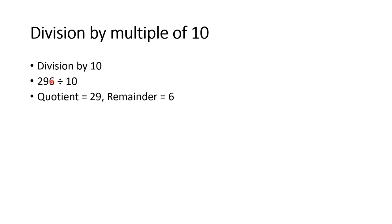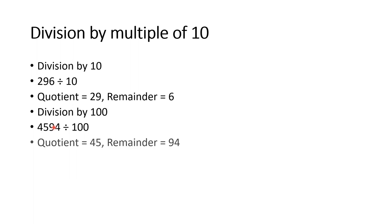Division by 100: since there are 2 zeros in 100, we hide the ones and tens place digits. For example, 4594 divided by 100 — we hide the last 2 digits, so the remaining number 45 is the quotient, and the hidden digits 94 are the remainder.